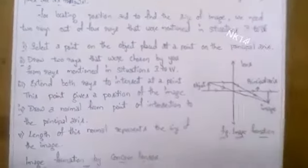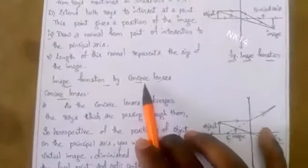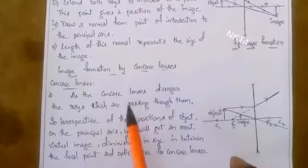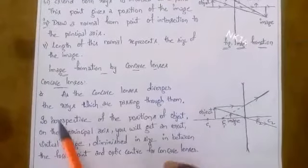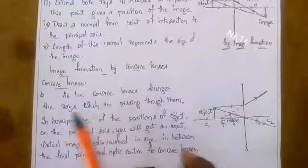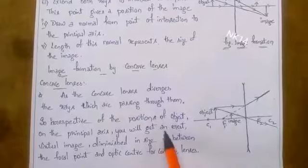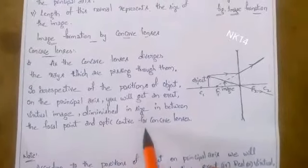These rules are important to draw any image for both concave and convex lenses. Now let's go to image formation by concave lens. As the concave lens diverges the rays passing through it, irrespective of the positions of the object on the principal axis, you will always get an erect, virtual, diminished image in between the focal point and the optic center of the concave lens.